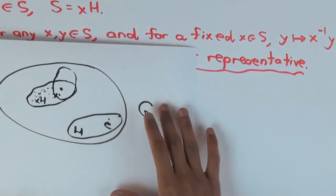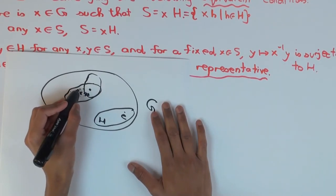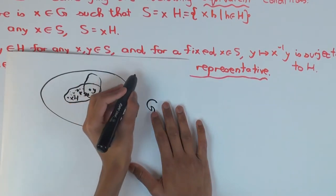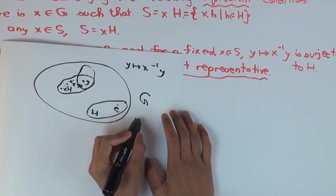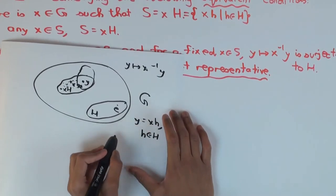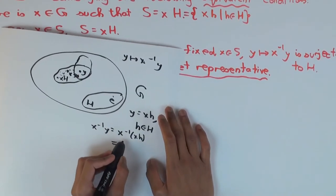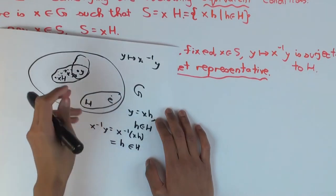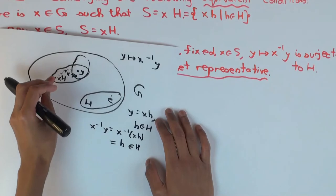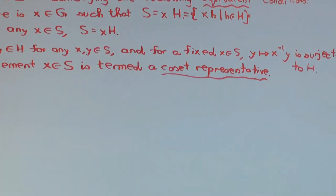There's a third equivalent characterization: if you pick an element x in the left coset and send any y to x⁻¹y, you'll get back into H. Because if y was of the form xh where h is in H, then x⁻¹y = x⁻¹(xh) = h, which is in H. So if I start with anything in the coset and translate back by x⁻¹, I get to the subgroup. If I take the whole coset and multiply everything by x⁻¹, I get back exactly the original subgroup. These are equivalent ways of defining a left coset.